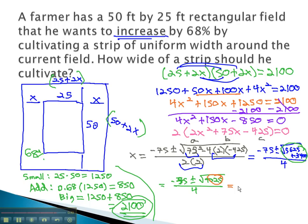The square root of 9025, we can evaluate, and we get negative 75, plus or minus 95, all over 4.